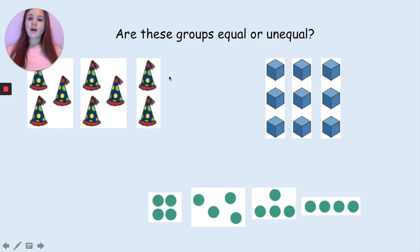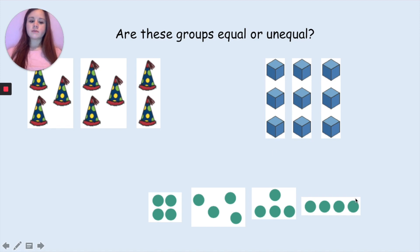Now are these groups equal or unequal? So we have some hats — three groups of hats — three groups of cubes and four groups of green spots. Pause the video to work out if these groups are equal or unequal.